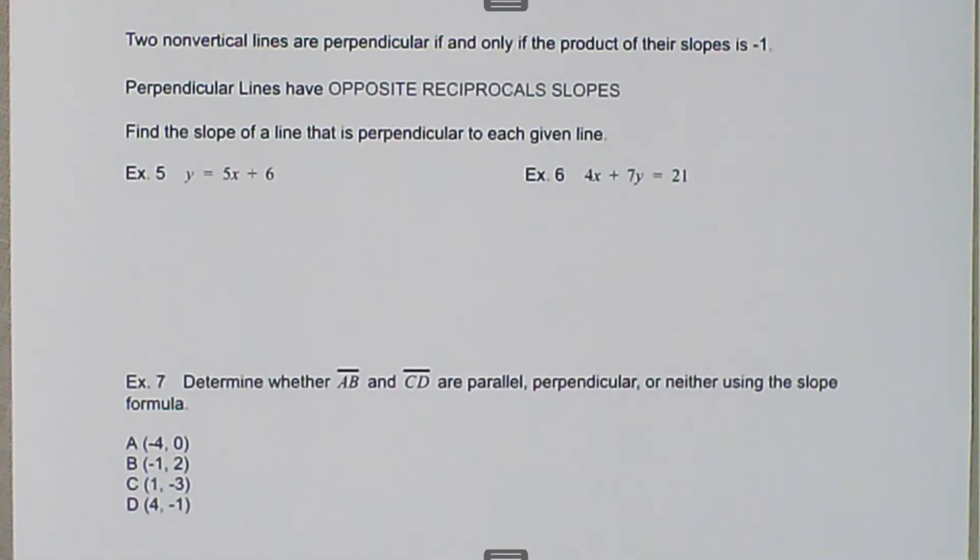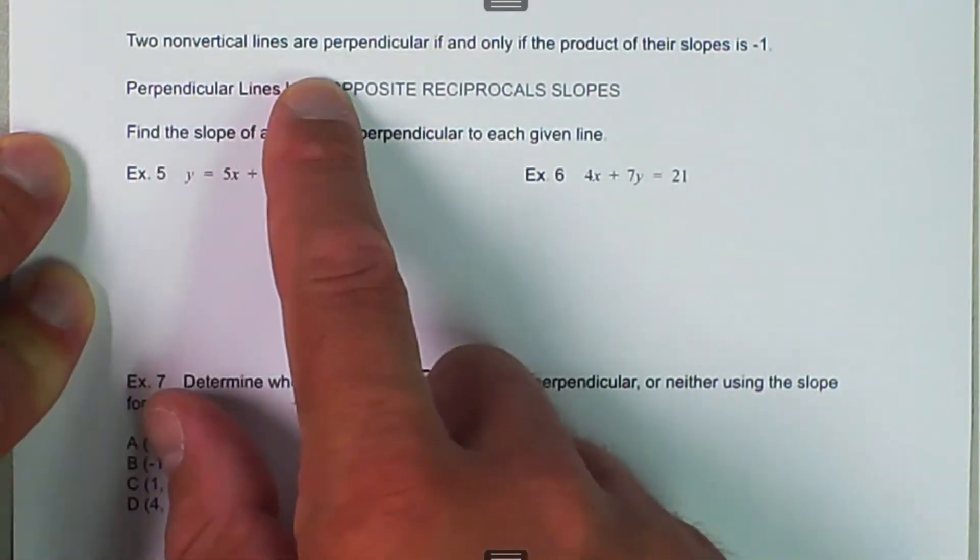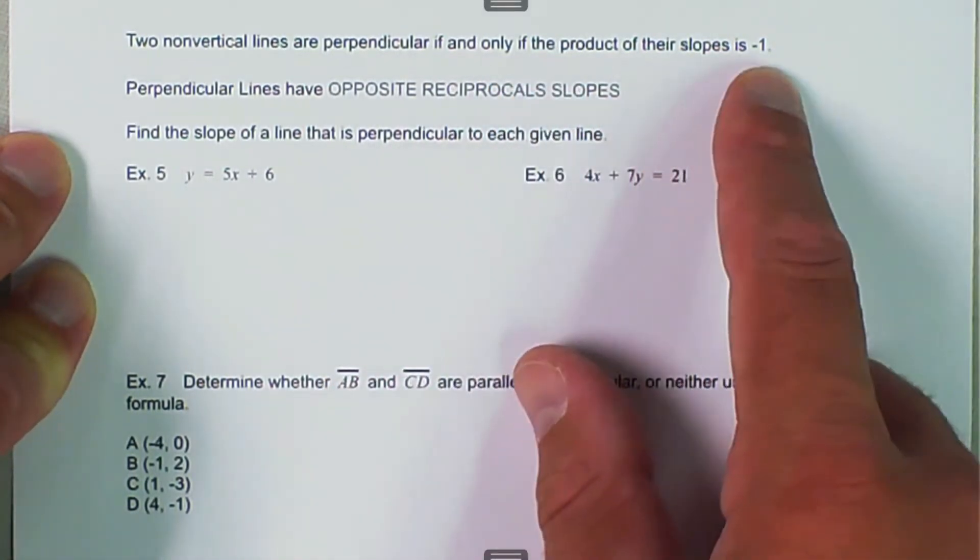We were talking about slopes of lines and equations of lines, and in this case, we were talking about perpendicular lines, in that they have opposite reciprocal slopes. So one other thing we can think about is two non-vertical lines are perpendicular if and only if the product of their slopes is negative one.